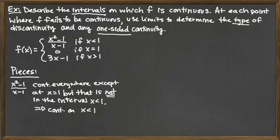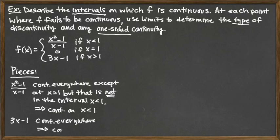The middle piece is just a point, so we ignore it. The last piece is the line 3x minus 1. Lines are continuous everywhere, so they're certainly continuous on a restricted domain — continuous everywhere, which means definitely continuous on the given interval x greater than 1 for this piecewise defined function.